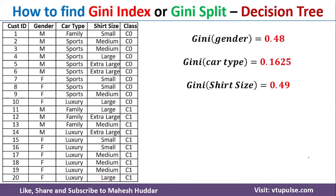Once we calculate the Gini for all attributes — Gini(gender) = 0.48, Gini(car type) = 0.1625, and Gini(shirt size) = 0.49 — we select the attribute with the smallest Gini value. The smallest value is 0.1625, so car type is selected as the best splitting attribute. When using entropy and information gain, we select the attribute with maximum information gain. But with Gini index, we select the attribute with minimum Gini index.